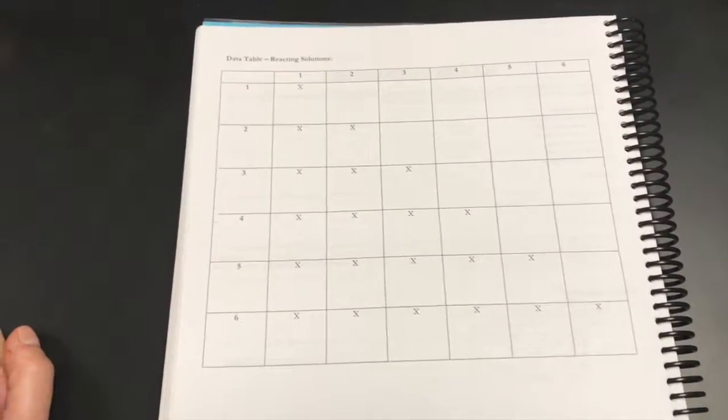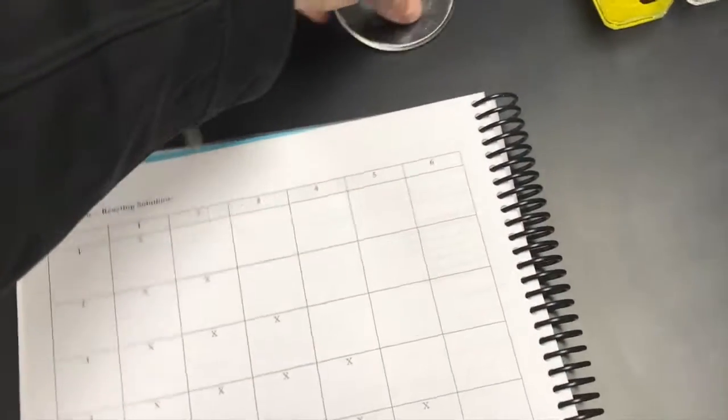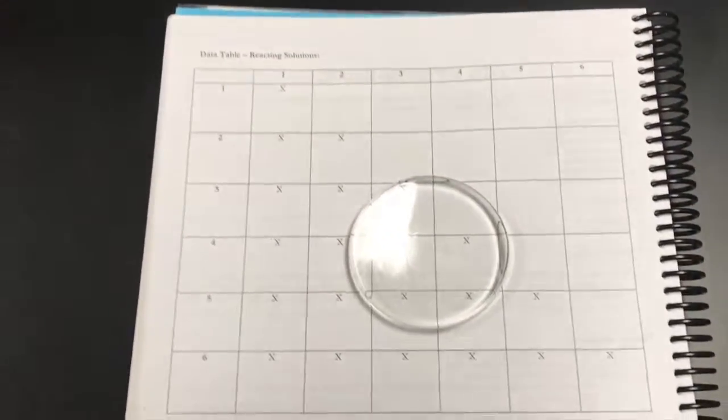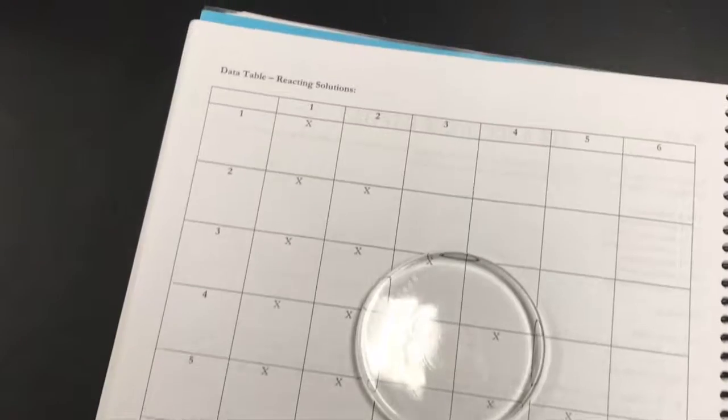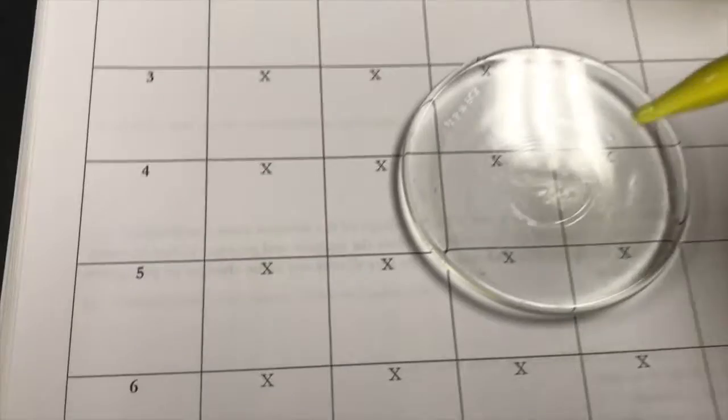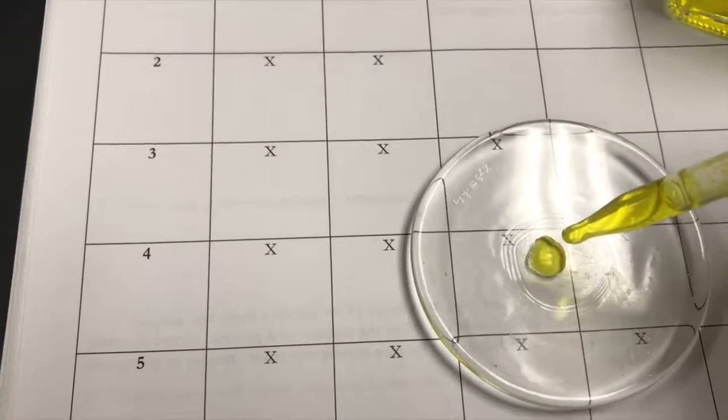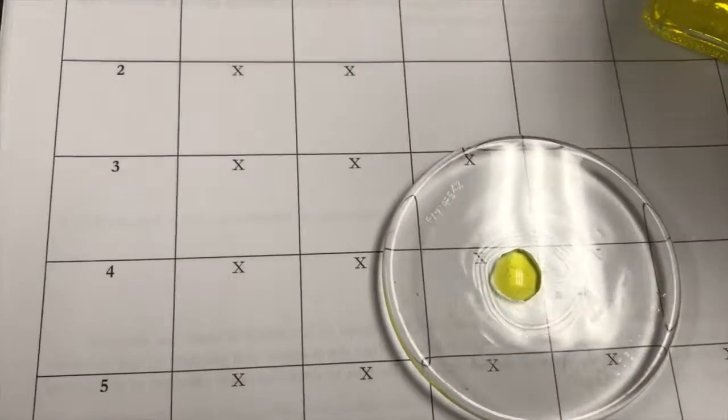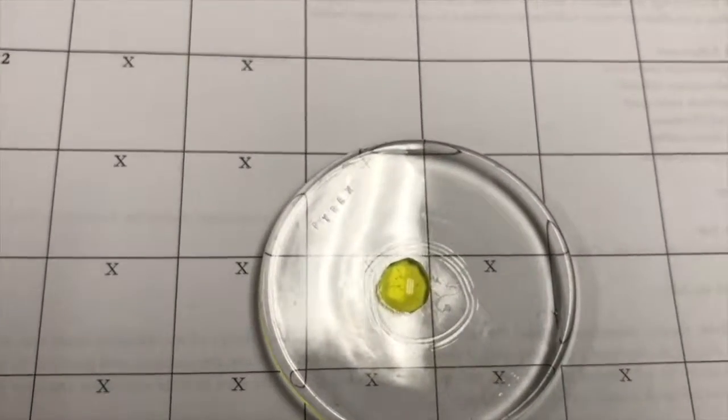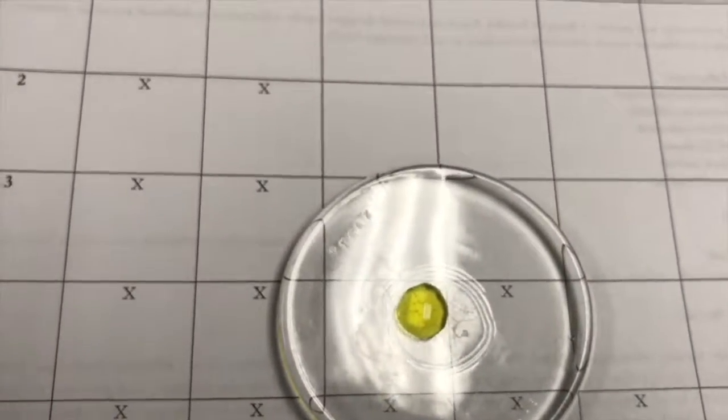For example, I'm going to take my watch glass and I'm going to add two drops of number one, and then I'm going to add two drops of solution number three, and anything that I observe I'm going to record.